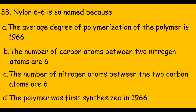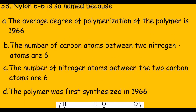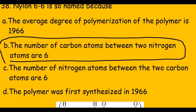There are four options given. Looking at the structure of nylon 6,6, you can see that between the two nitrogen atoms there are six carbon atoms present. So clearly the correct option is: the number of carbon atoms between two nitrogen atoms is six. This is the correct option, option B.